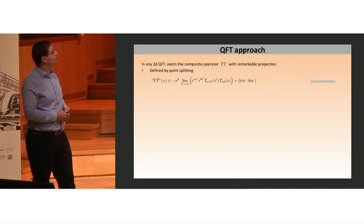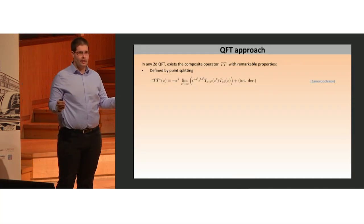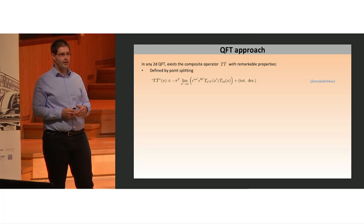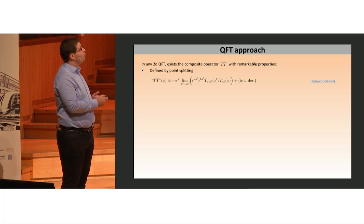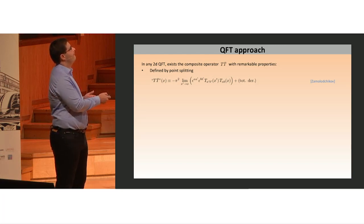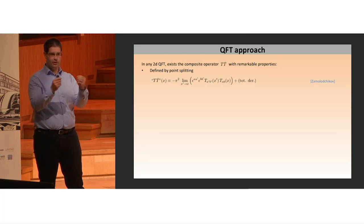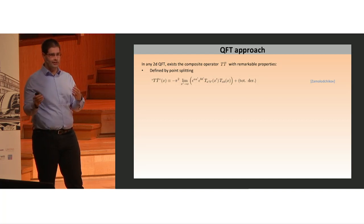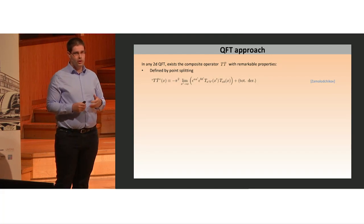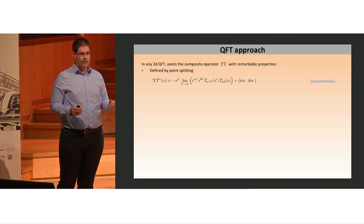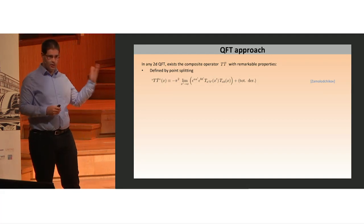We'll start with the QFT approach. It all started with Zamolodchikov's realization that any two-dimensional quantum field theory contains a remarkable composite operator. We take two stress tensors, point-split them, contract their indices with the epsilon symbols, and then take the coincident point limit. This limit is regular up to total derivatives. What we get is the determinant of the stress tensor, and we call this operator TT-bar.